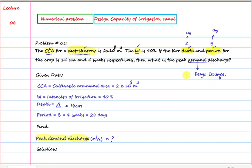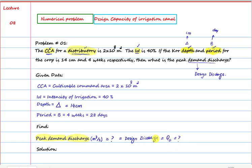Whenever we design a canal, we design it based on the peak demand discharge value. So we are asked to find the design discharge. The given data is: CCA = 2×10⁸ m², IOI = 40%, Delta = 14 cm, and period B = 4 weeks (28 days). We need to find the peak demand discharge, i.e., Q design.